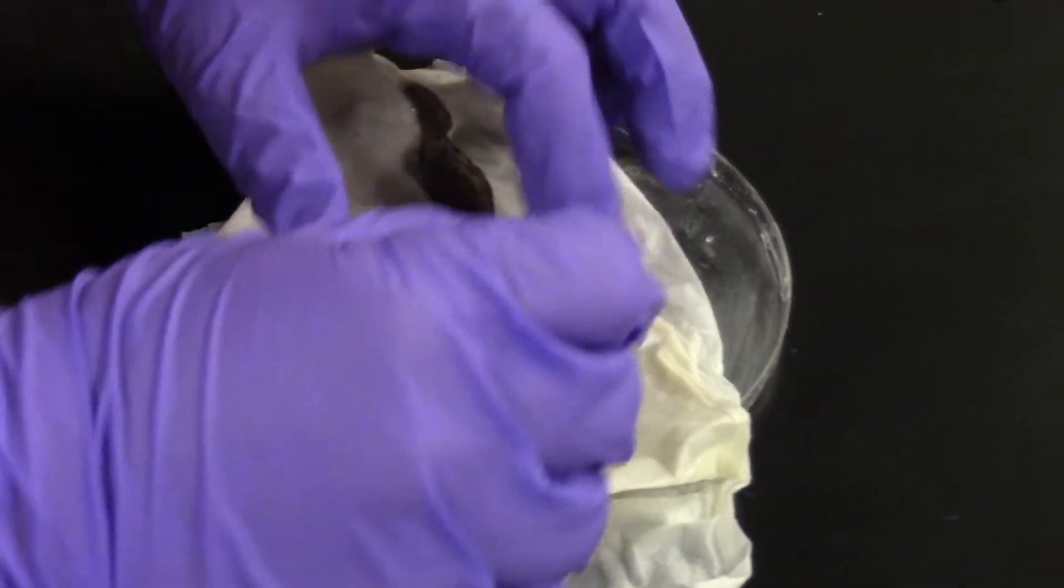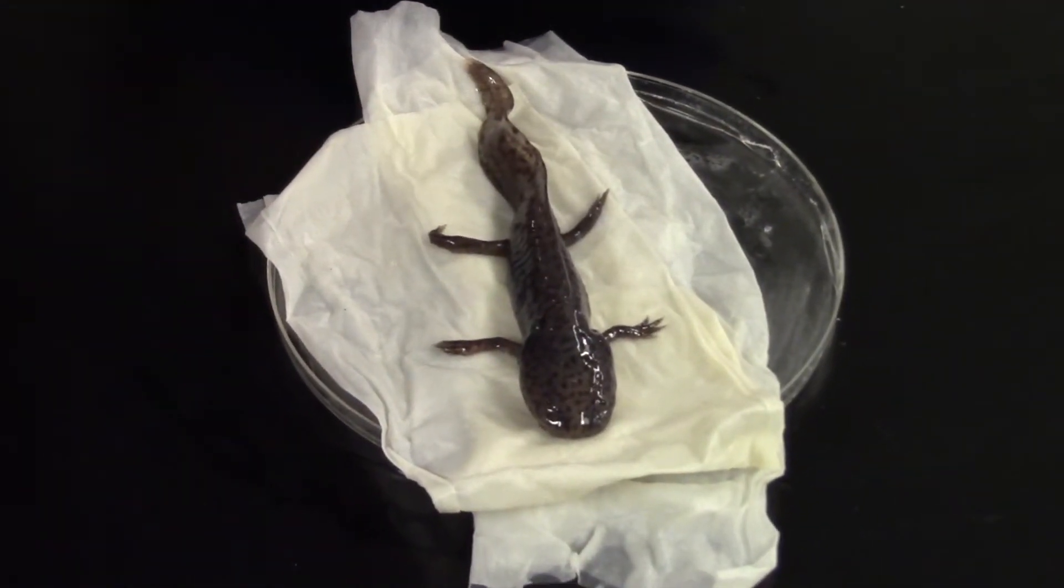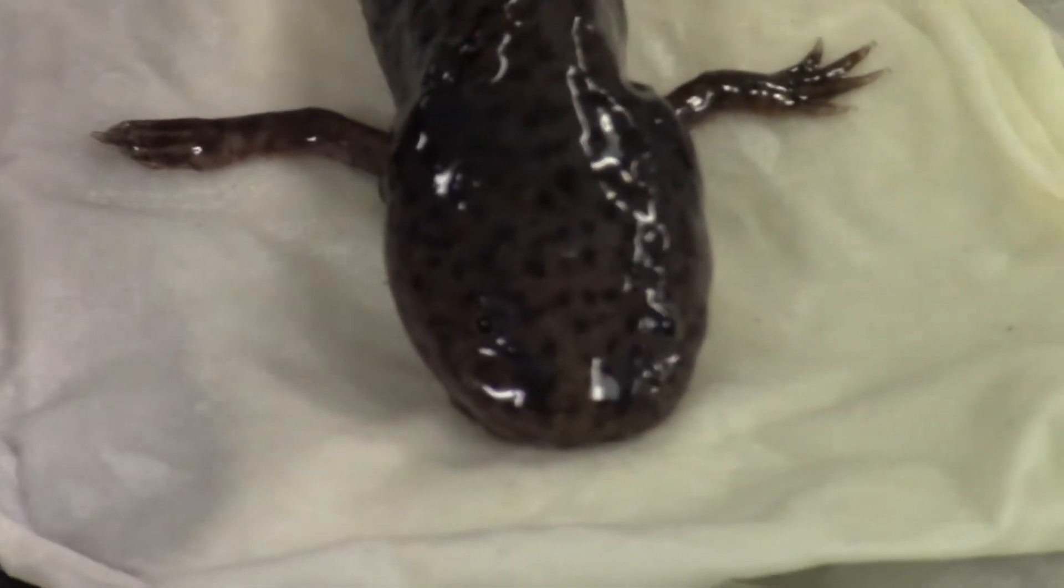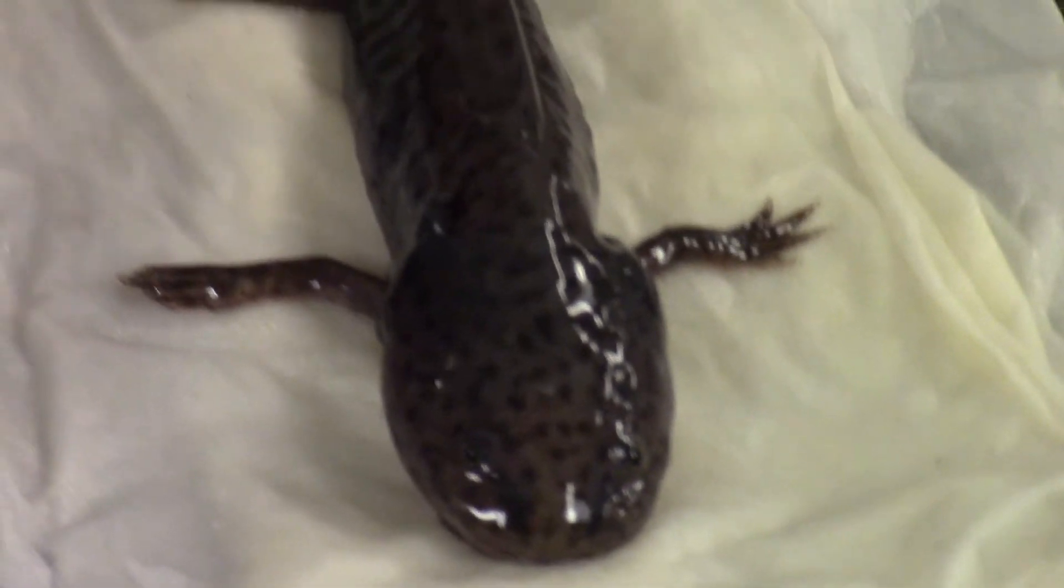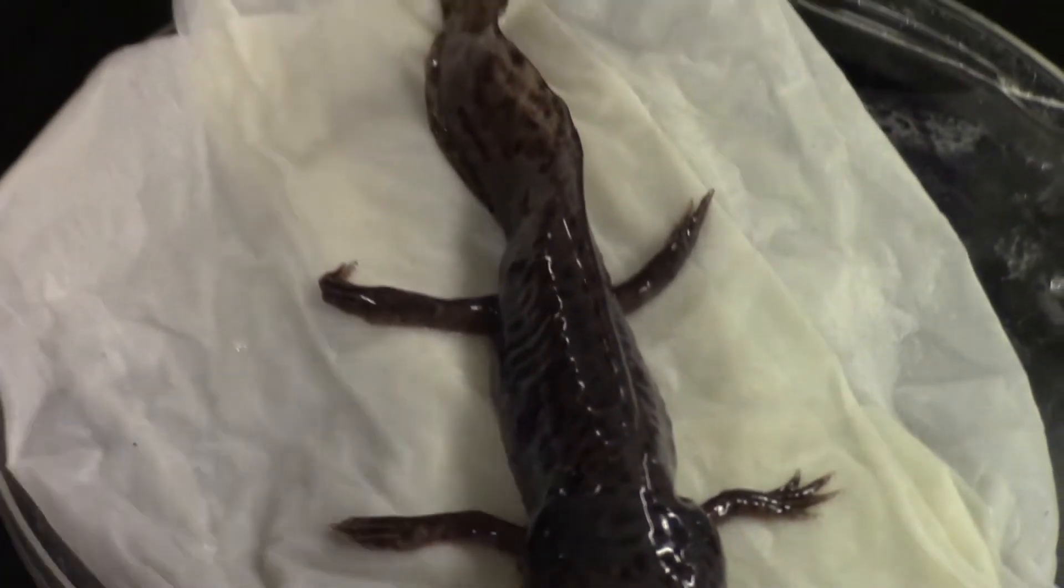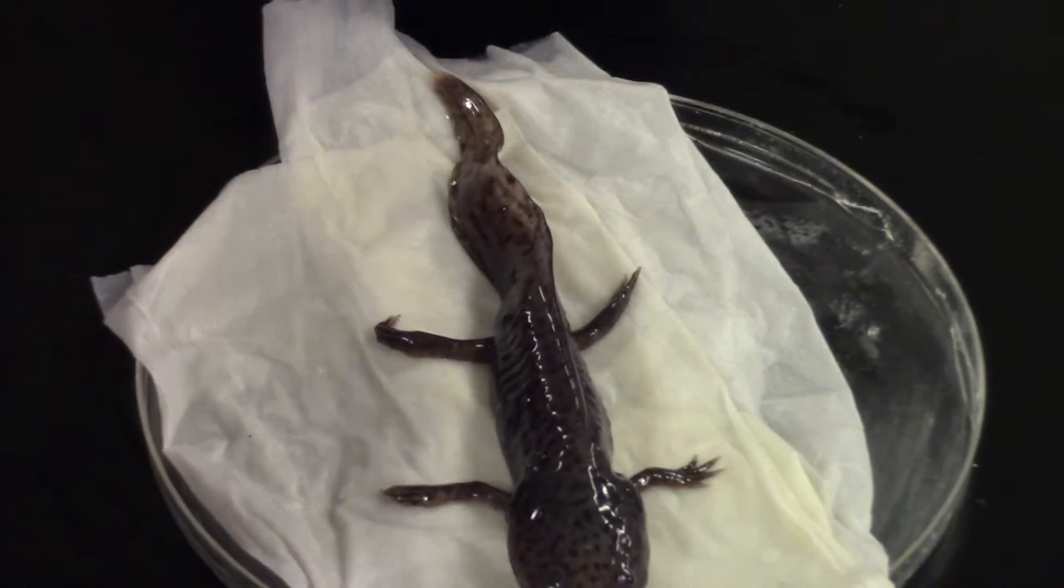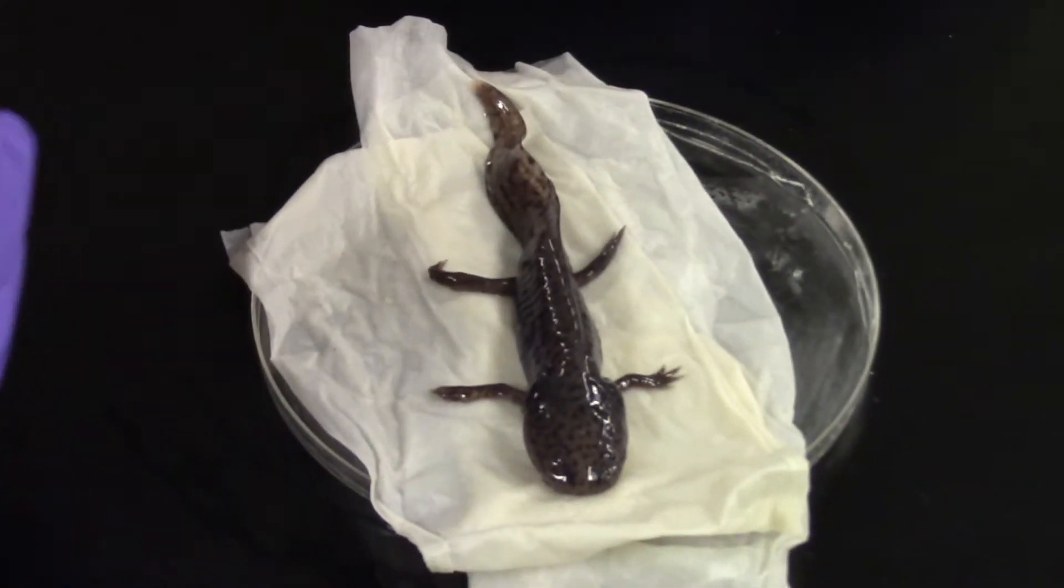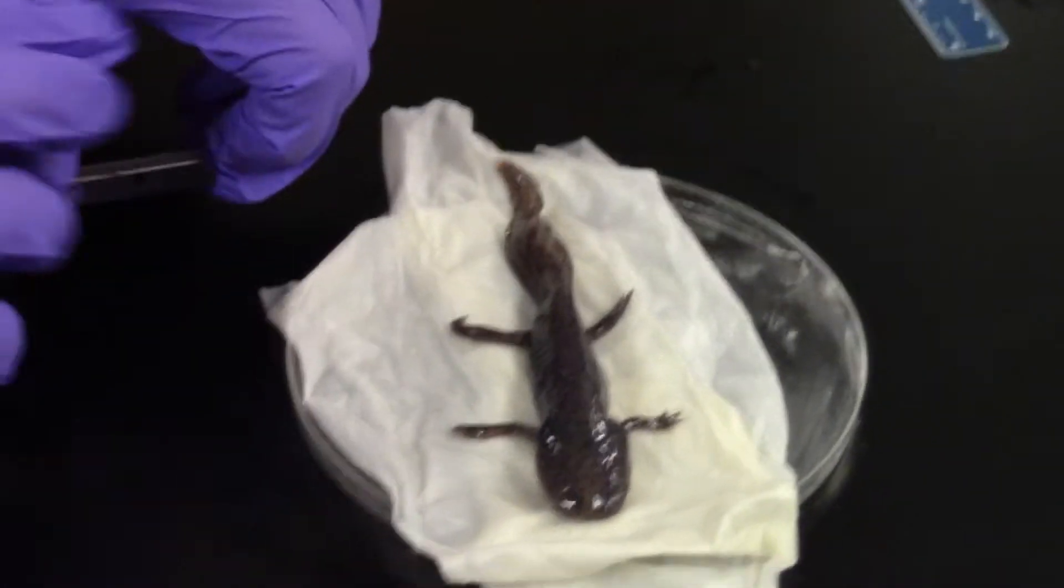So remember please, developmental biology students, we call this amputation under anesthesia. We never say things like chop somebody's limb off because we care about these animals. Okay seriously, they are my pets.